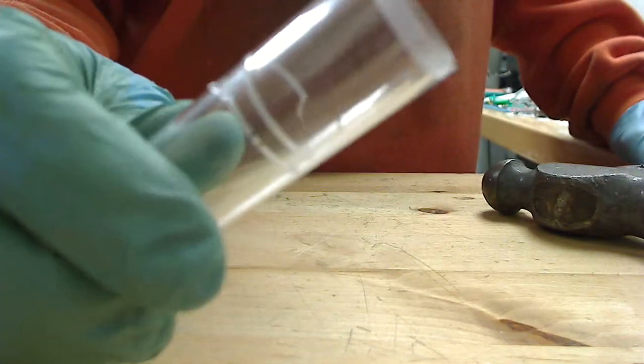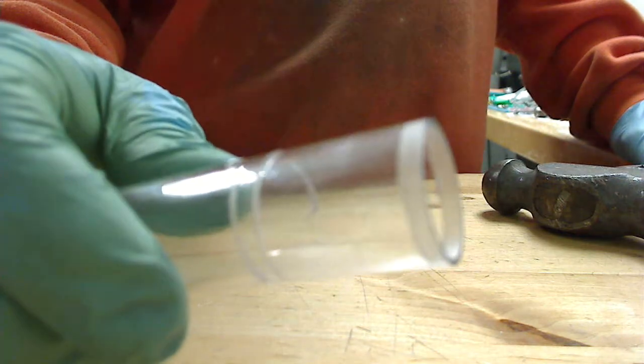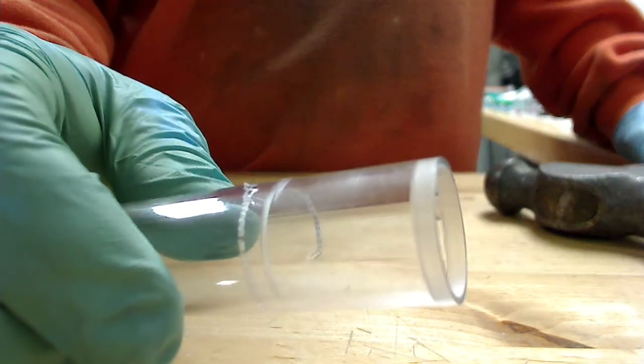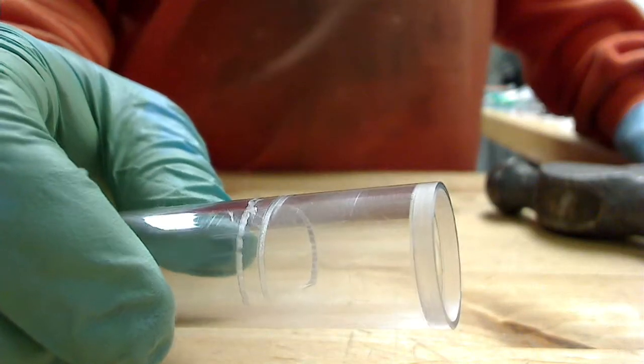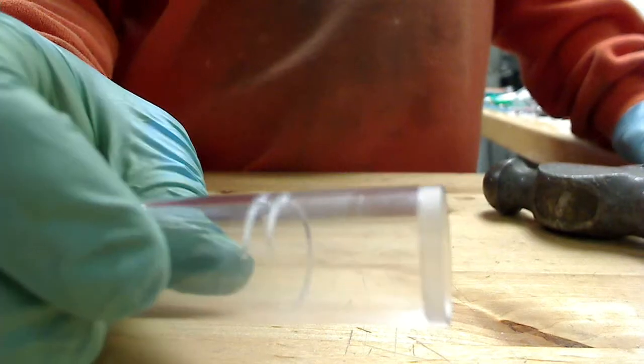Some juices will crack polycarbonate tanks, and you got to make sure there's no record of the juice you're interested in cracking tanks before using them.